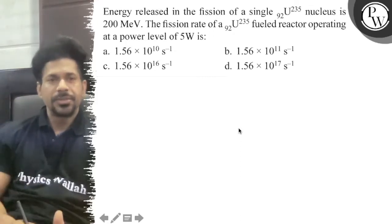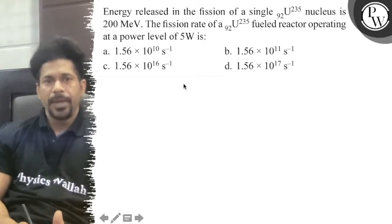Hello students, let's see the question. Energy released in the fission of a single U-235 nucleus is 200 mega electron volts. The fission rate of a U-235 fueled reactor operating at a power level of 5 watts is: